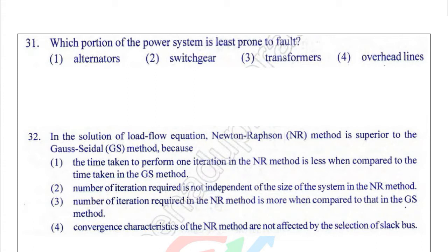In all four options, the switchgear, transformers, and overhead transmission lines are exposed to atmosphere such as lightning surges and thunder strokes. The alternator is the part which is least prone to faults, so alternator is the answer.